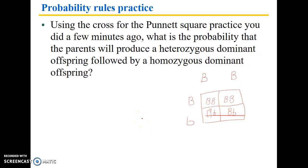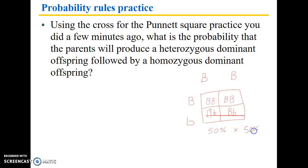What's the probability of producing a heterozygous dominant offspring? That's going to be 50%. And the probability of then producing a homozygous dominant offspring is also 50%. So what we do is multiply those together: 50% times 50% gives a 25% chance of producing a heterozygous dominant offspring followed by a homozygous dominant offspring.